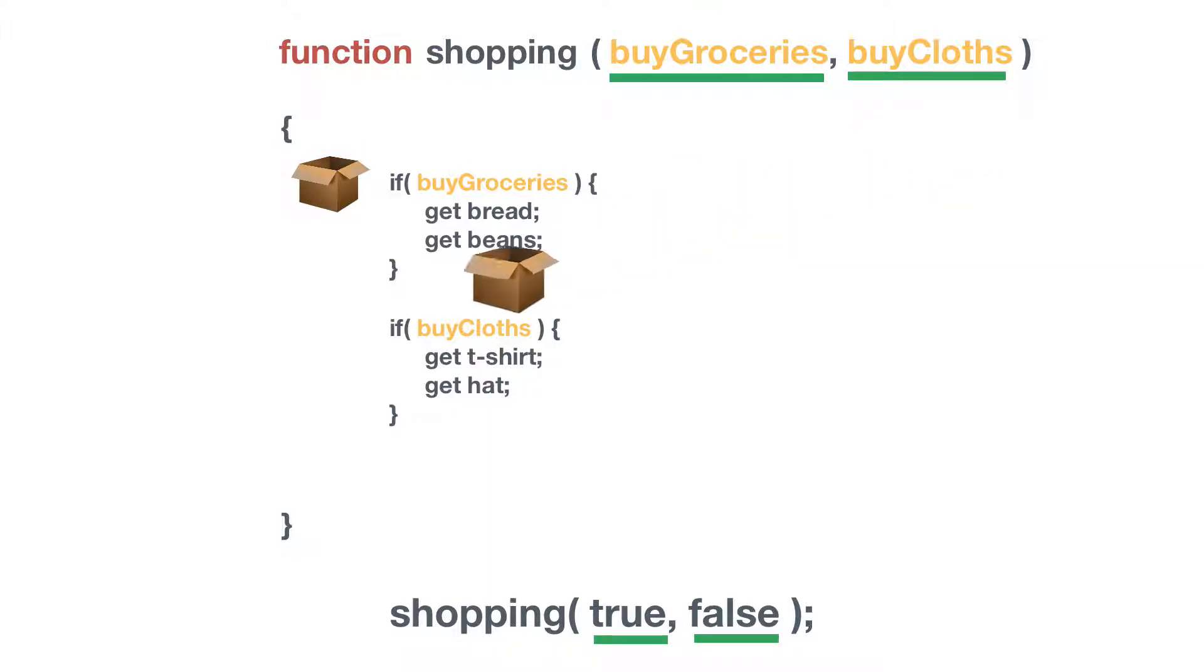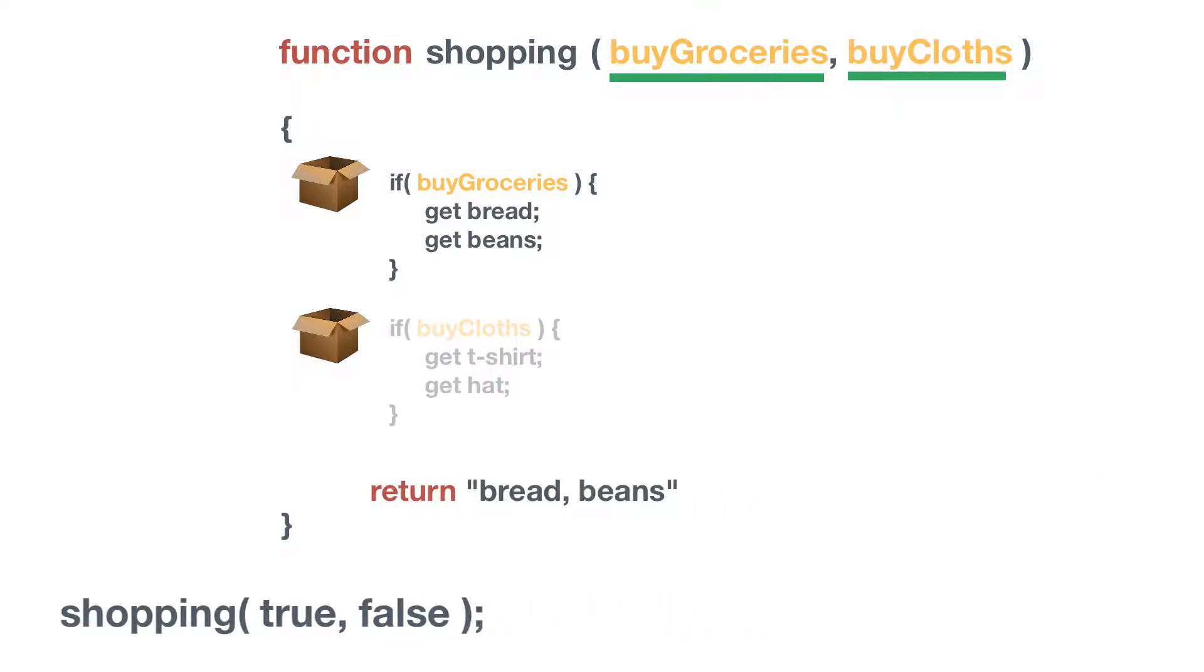If I want to buy clothes well that's actually false and we're getting that value from the argument passed in. We don't want to buy clothes now. So we skip over that completely. So we've only bought groceries and no clothes. So now what I have is a return statement that returns all of the items that I have purchased.